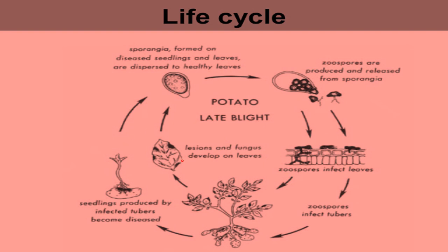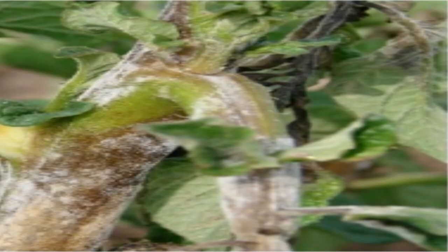Factors responsible for an epidemic include: nighttime temperature below the dew point for more than four hours, or a minimum temperature of 10 degrees centigrade, or continuous rain for at least 24 hours with at least 0.1 millimeter of rainfall — any of these will cause an epidemic of this plant pathogen.